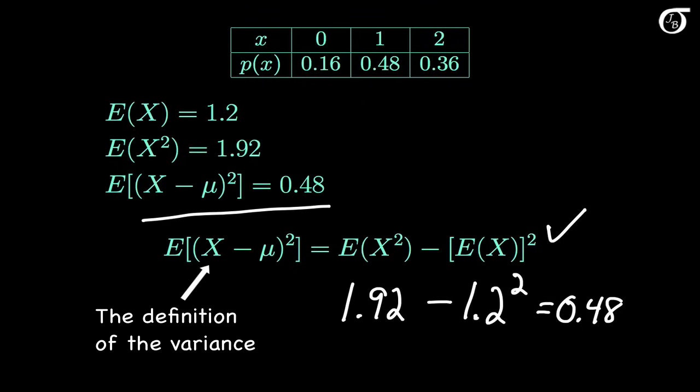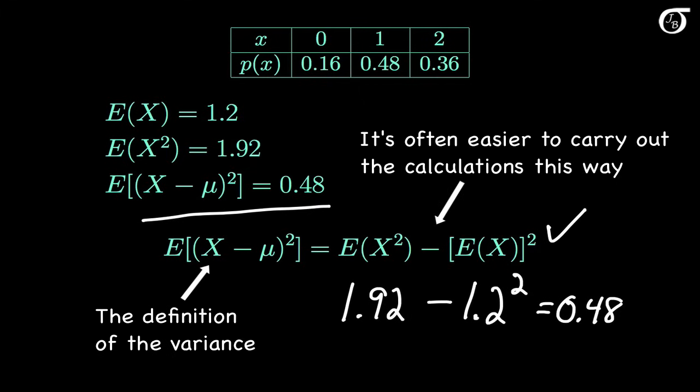The variance of a random variable X is defined as the expectation of (x minus its mean) squared, and that expression is intuitive for explaining what variance means. But it's usually easier to use the formula E[x squared] minus mu squared for calculations. We've often already calculated the expectation of x, so we just need to calculate the expectation of x squared, which is usually a little easier. And that's a brief introduction to expectation and variance of discrete random variables.